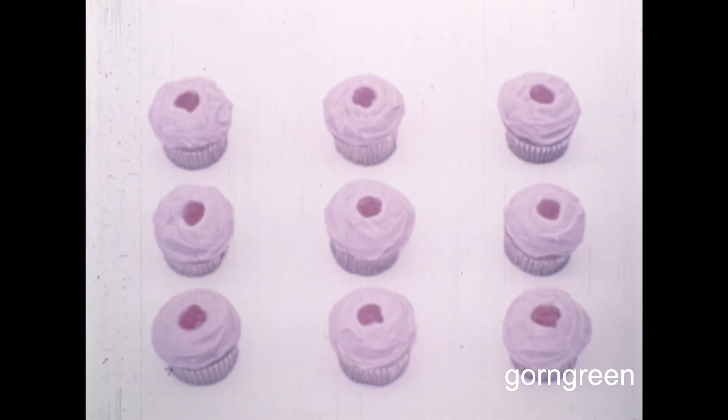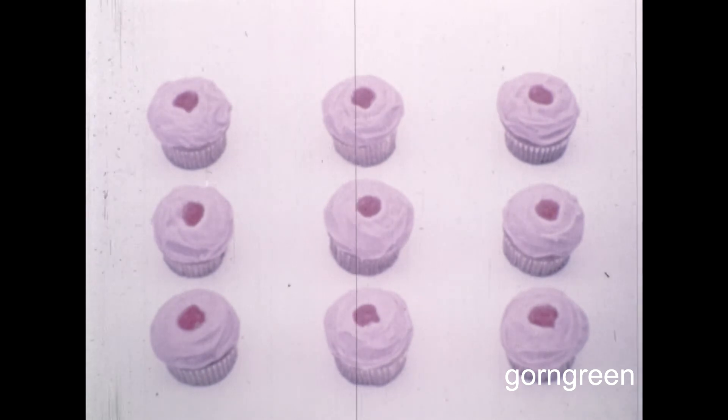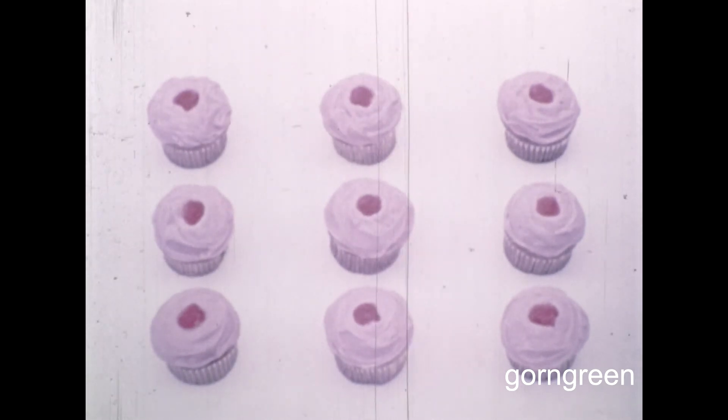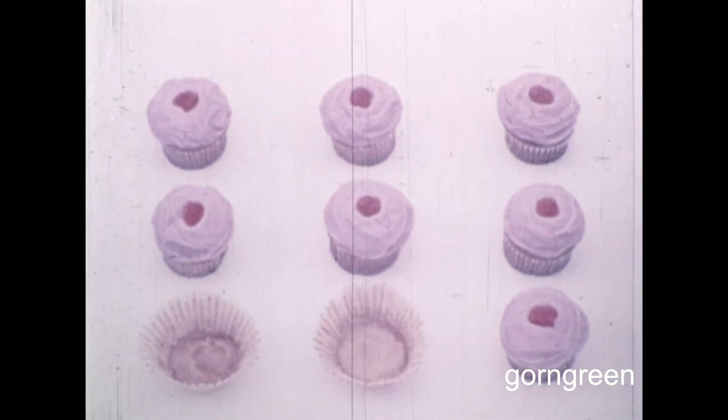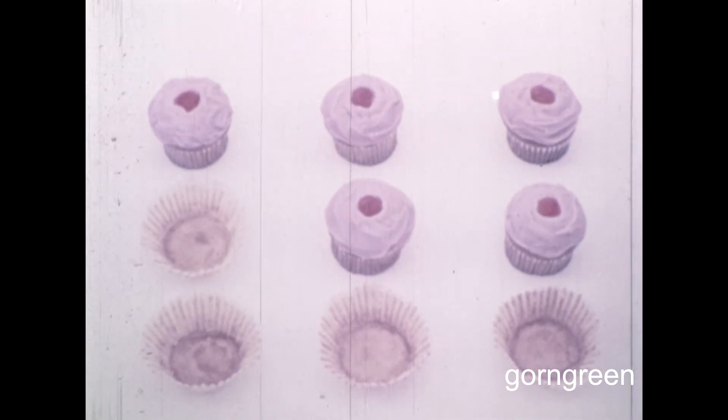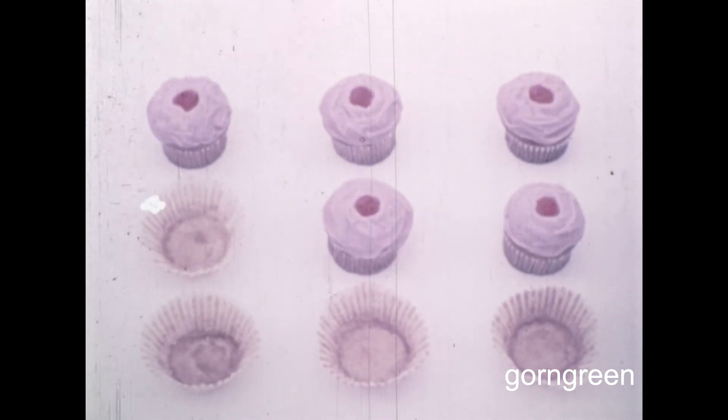Now, let's do some more subtraction. But this time, let's find out how many were taken away instead of how many are left. How many cupcakes do we have? One, two, three, four, five, six, seven, eight, nine. Nine cupcakes all together. And let's say that someone comes in and eats some of the cupcakes. How many cupcakes do we have left? One, two, three, four, five. We have five cupcakes left. How many were eaten or how many were taken away?